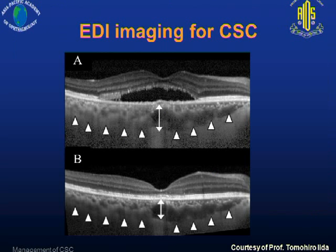With the use of PDT, we can actually treat this condition by reducing the choroidal hyperpermeability. You can see that after PDT treatment, this will reduce the choroidal thickness with resolution of the subretinal fluid.